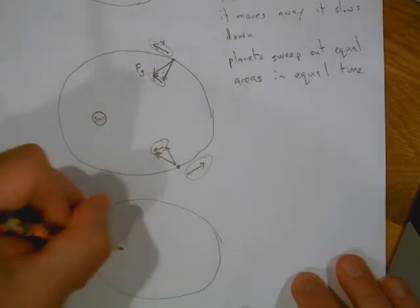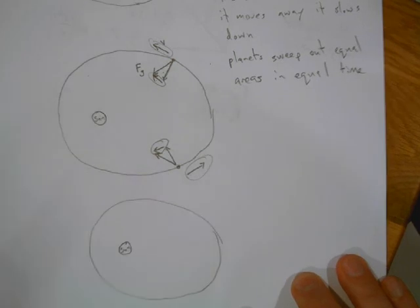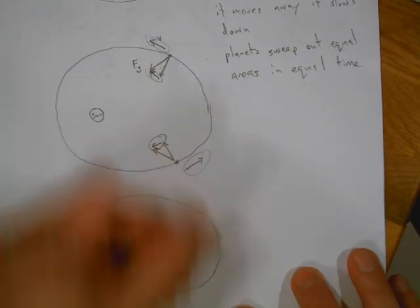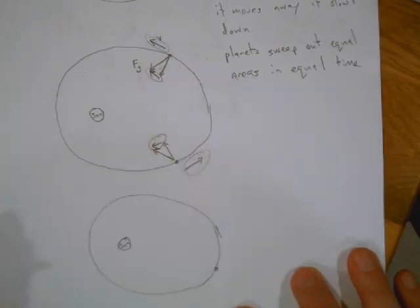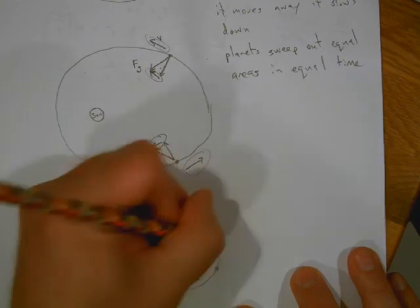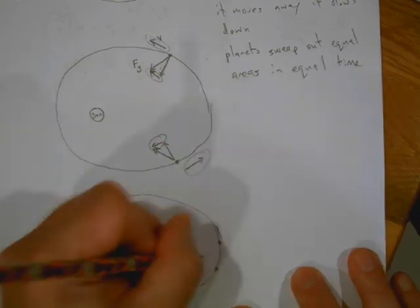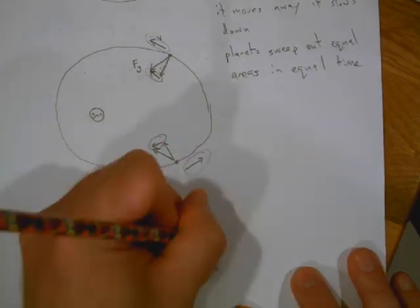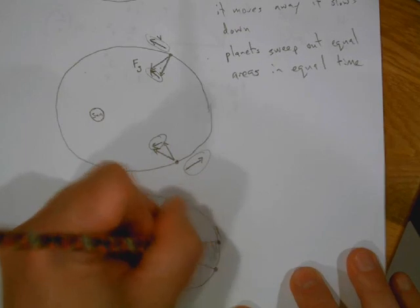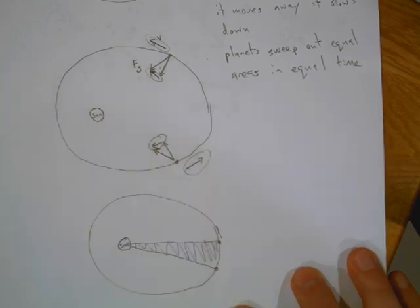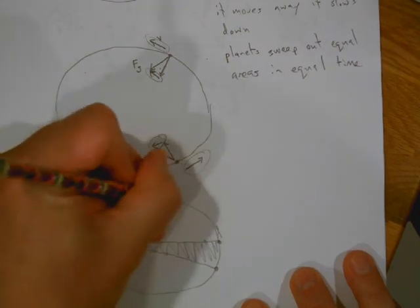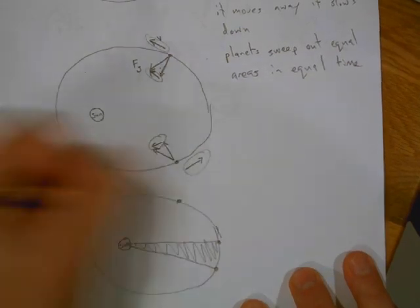So if I have my orbit again, here's my sun. Well, let's say I take - the planet was right here. And after 60 days, the planet is right there. Okay, well, if I look at this area, any other place where if I take 60 days, that area is going to be the same. Well here...